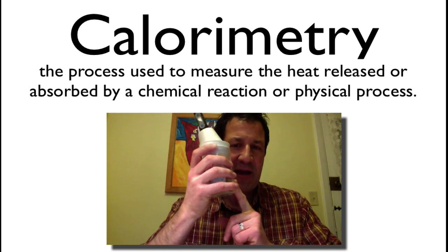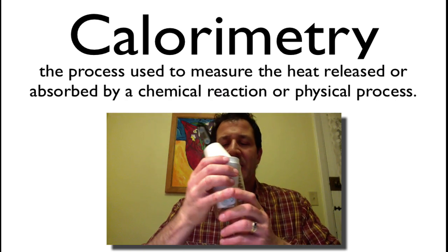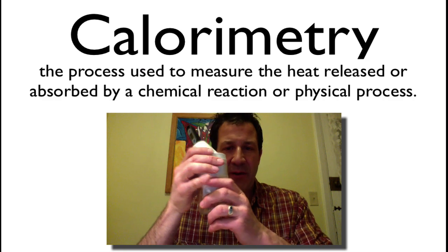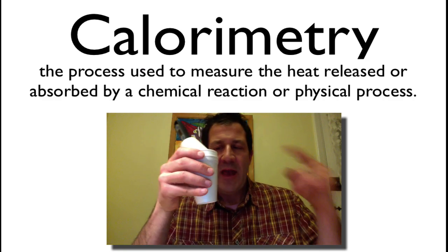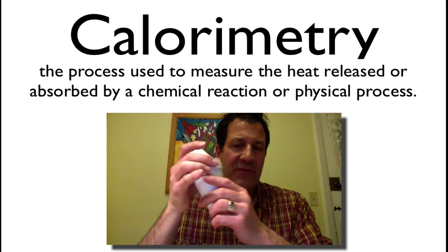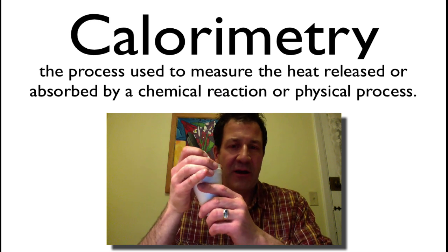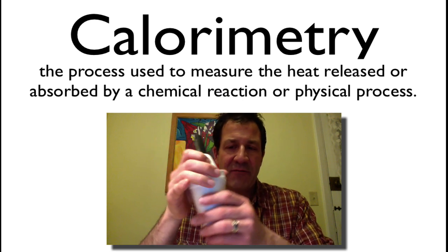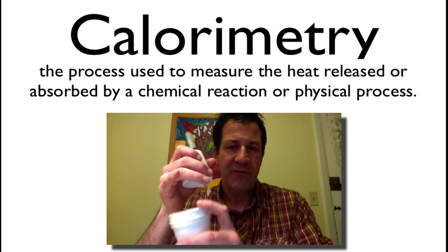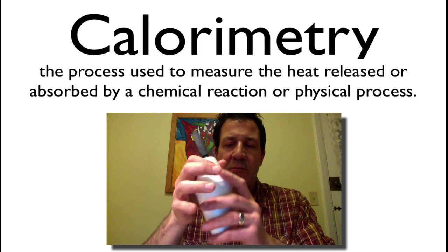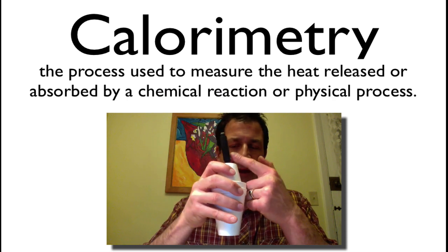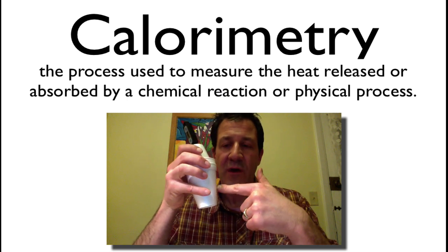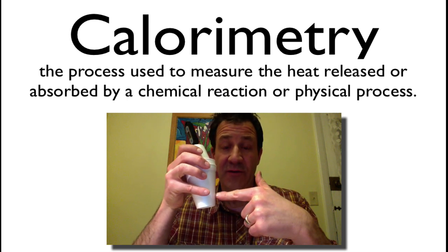This is my calorimeter. It's a very simple device. It has a beaker on the bottom so it won't tip over when I put it down, and it has two styrofoam cups. This is called a coffee cup calorimeter because it's simply made from styrofoam cups. It gives a little insulation. I have two cups on the bottom, one for a lid, and I have a thermometer to measure the change in temperature of the water that goes in the calorimeter.